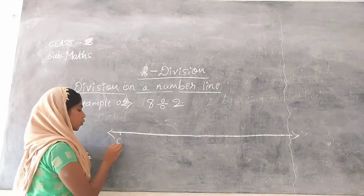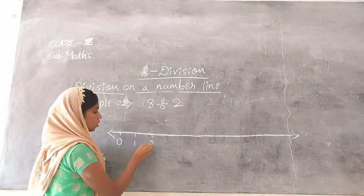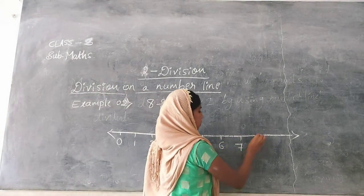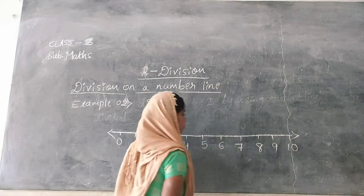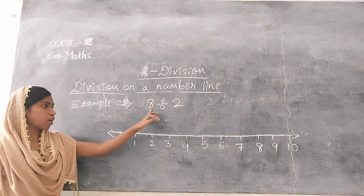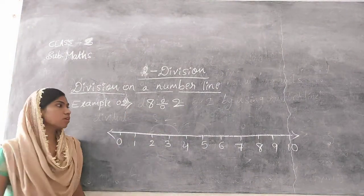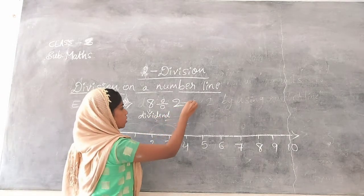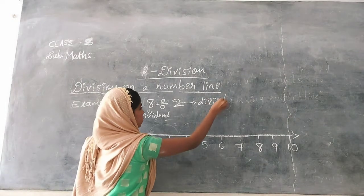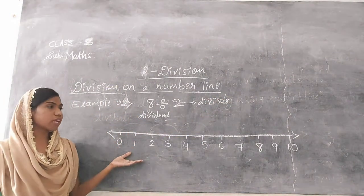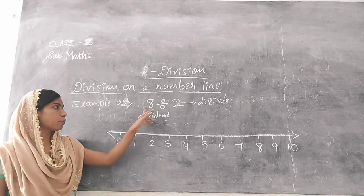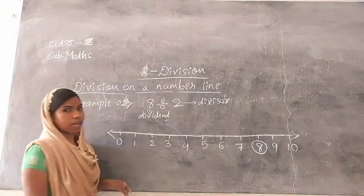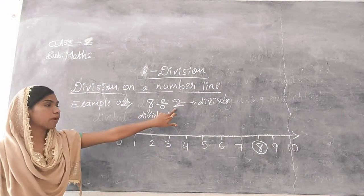And write the numbers from 0: 0, 1, 2, 3, 4, 5, 6, 7, 8, 9, 10. In this second example, 8 is the dividend and 2 is the divisor.